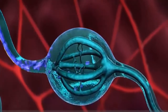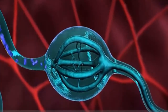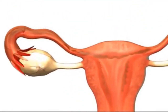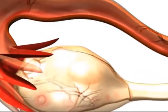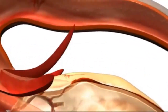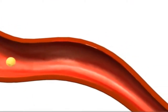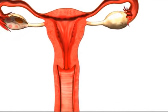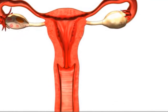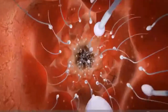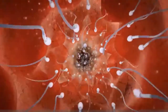FSH and LH both stimulate the ovarian follicle to mature. Most women ovulate — releasing a mature egg from the ovary — in the middle of their monthly cycle. For instance, if a woman has a 28-day cycle, she will typically ovulate around the 14th day after her last period began. If a sperm fertilizes the egg at that moment, a new life begins.